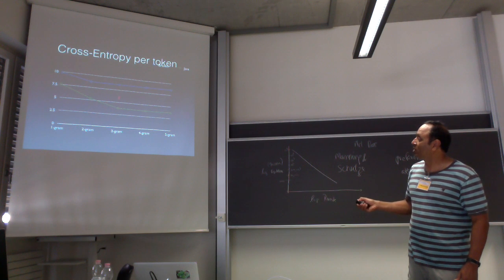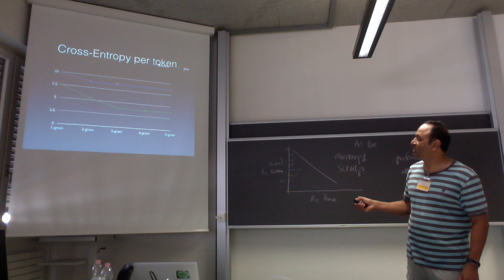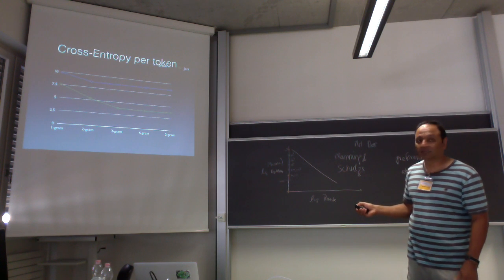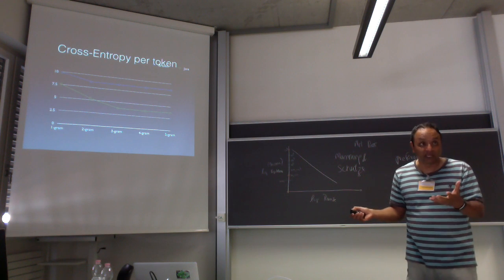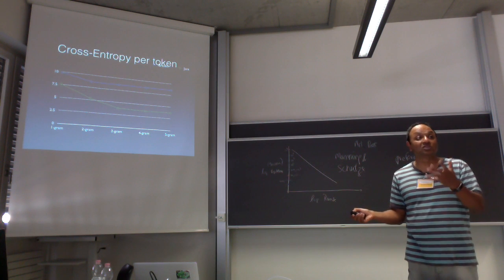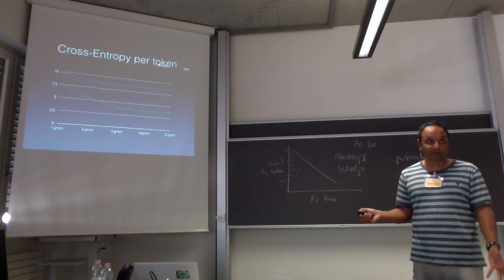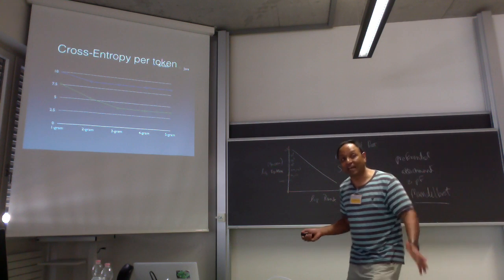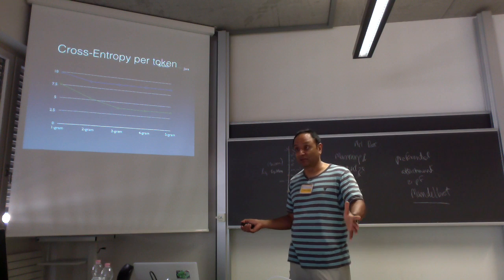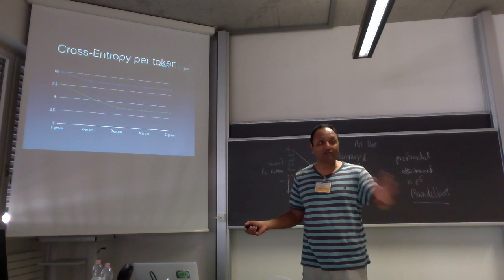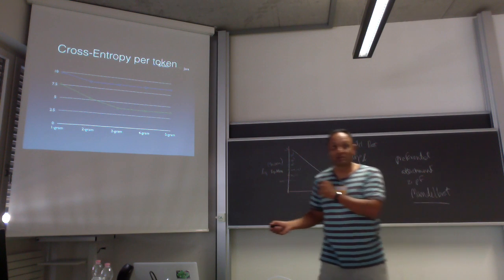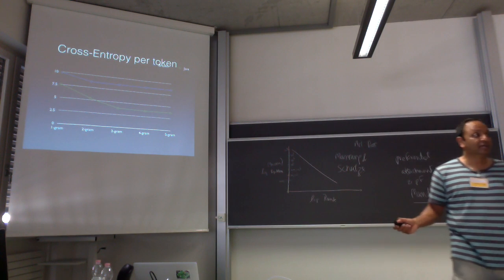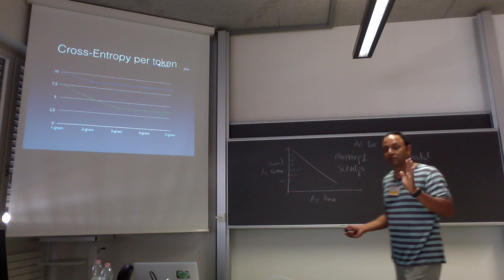And once you get to the trigram level, look at this difference. This is around 8.7 bits for English, and around 3 bits for code. Code is between 4 and 5 bits less information than English, which means code is 16 to 30 times more predictable than English. So whatever algorithms the NLP people have come up with over 30 years of advances, those algorithms should work so much better for code.